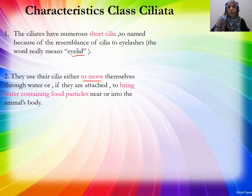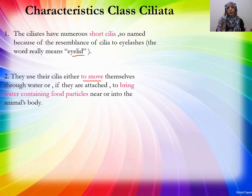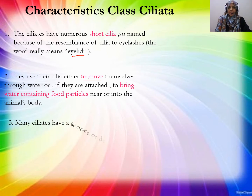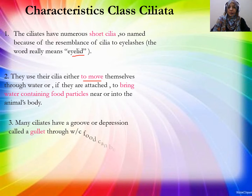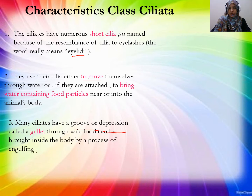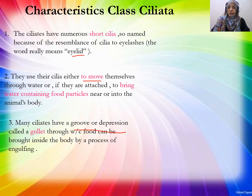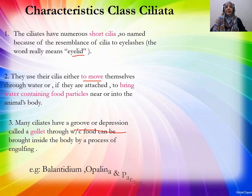When cilia beat in water, they act as wipers, sweeping food particles into the body through the mouth opening. Food particles enter the body through the oral groove. The process of taking in food is called engulfing. Examples of ciliates include Blanpedium, Opalina, and Paramecium — Paramecium being the most common.